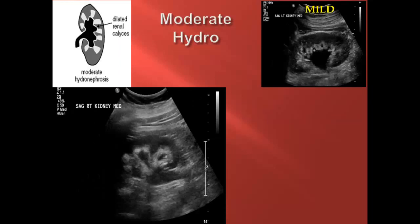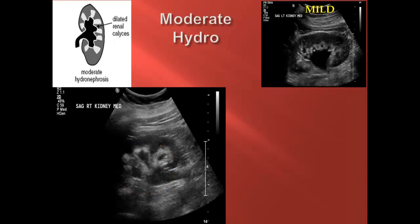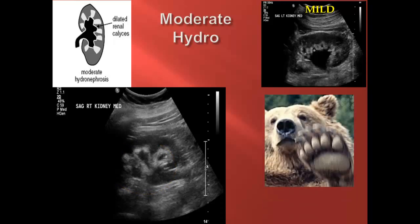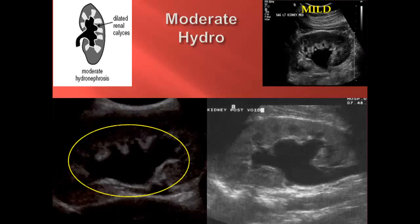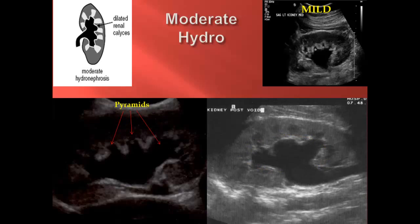Here we have an example of moderate hydronephrosis in the bottom left corner and a case of prominent mild hydro for comparison in the upper right corner. In moderate hydro, progressive dilation of the calyces leads to glove-like splaying of the sinus and ballooning out of the medullary pyramids. This appearance has been compared to that of a bear claw. Here we have two examples of moderate hydronephrosis, and you can notice the glove-like splaying of the sinus and ballooning out of the medullary pyramids creating the appearance of a bear claw.